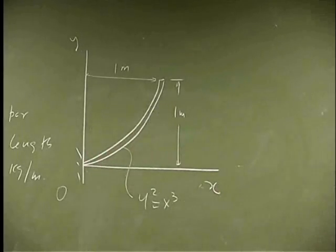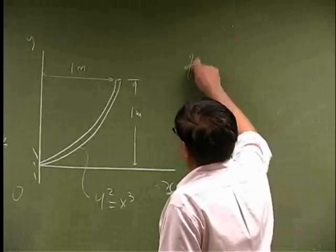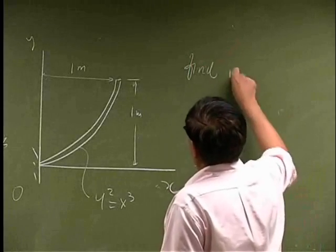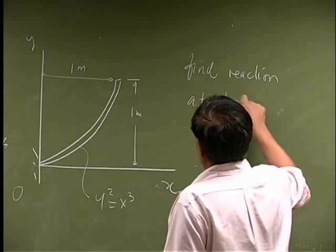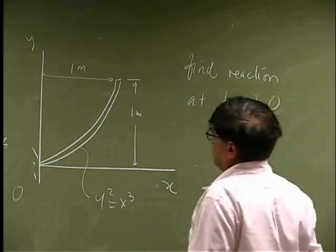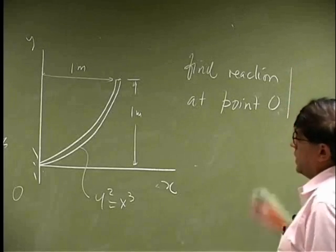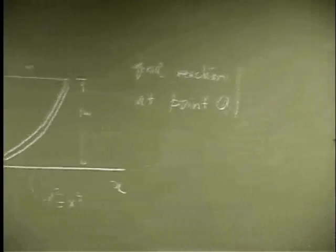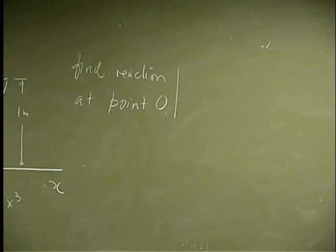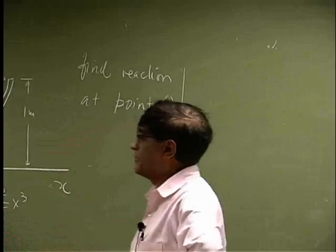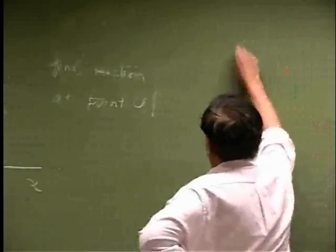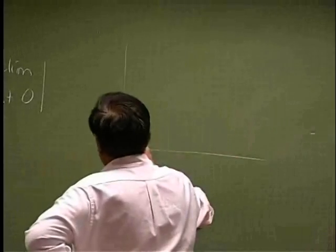Okay, for the rod shown here, you want to find the reactions. The question here is to find reactions at point O, given that you have the mass which is 0.5 kilograms per meter, and then the shape of the rod is defined by this equation y squared equals x cubed. So let's see what we need in here.